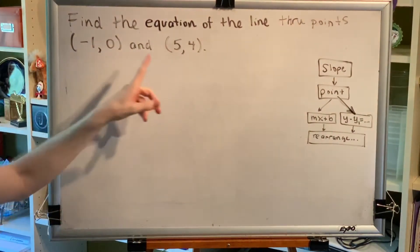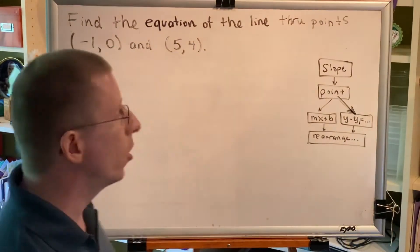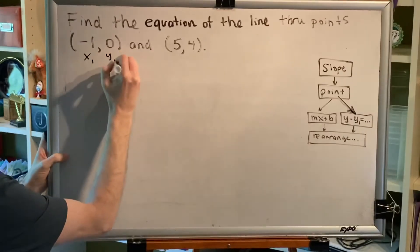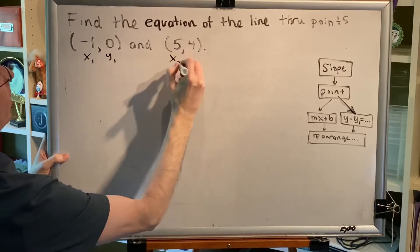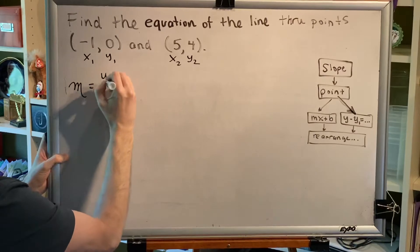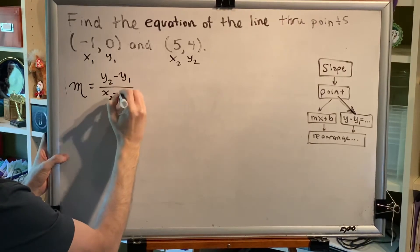For this problem we're given two points, and if you want to know the slope of the line that goes through two points you use the slope formula. Let's call this first point x₁y₁ and let's call this second point x₂y₂. The slope formula says m equals (y₂ - y₁) / (x₂ - x₁).